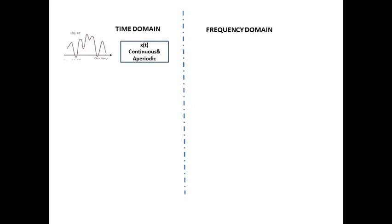Let us see a flow. The signal we have taken is a continuous time and aperiodic signal — you can look into the signal which is continuous time as well as aperiodic. Instead of keeping it in time domain, we need to represent it in frequency domain. The process or transformation used for that is called Continuous Time Fourier Transform.